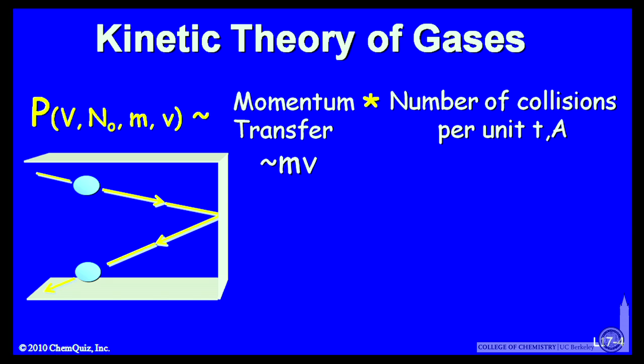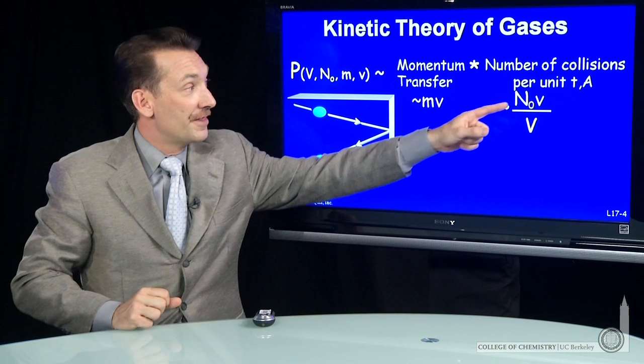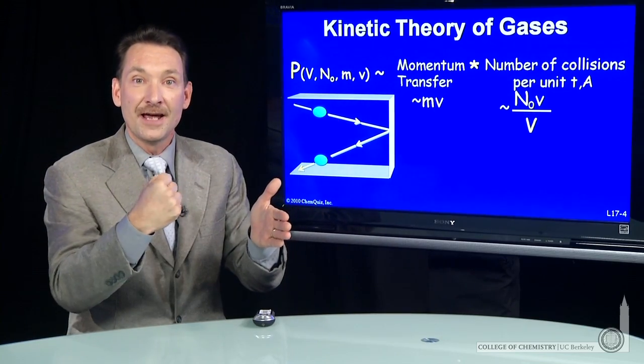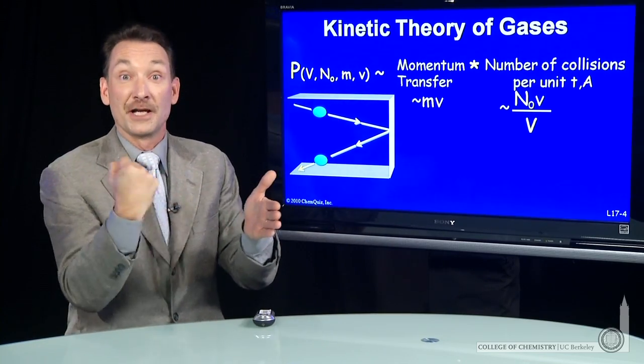The number of collisions per unit time and unit area are going to be based on the number of particles, because if you have more particles, everything else being equal, you'll have more collisions with the wall. Their speeds, v—if there's more speed, everything else being equal, the particles are going to hit the wall more often.